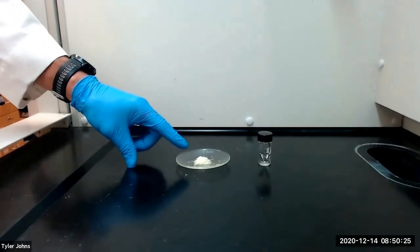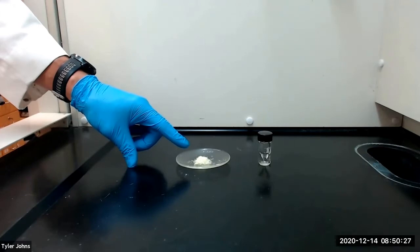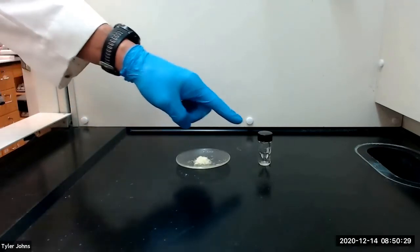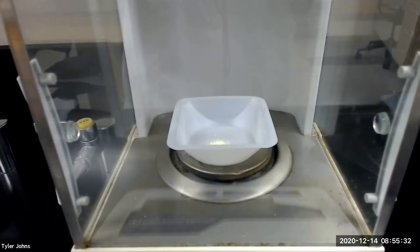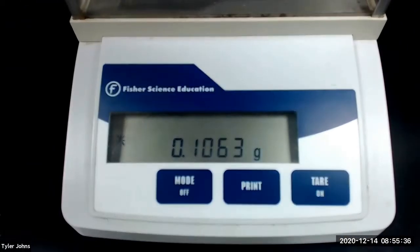We will begin by adding approximately 0.1 grams of the benzyl product from part B to a 3 milliliter conical vial. The mass of benzyl that we will be using is 0.1063 grams.